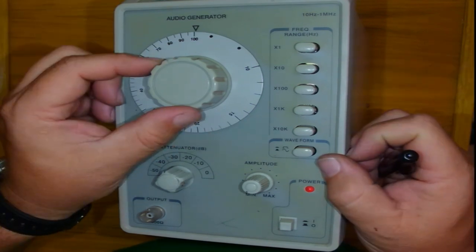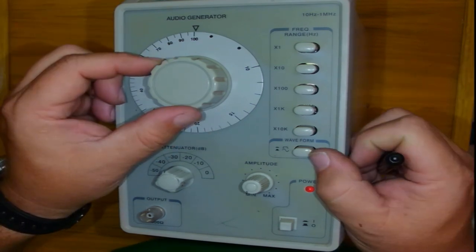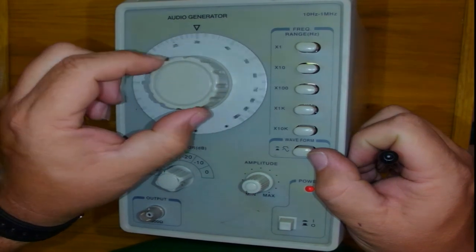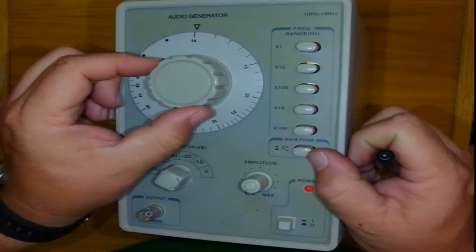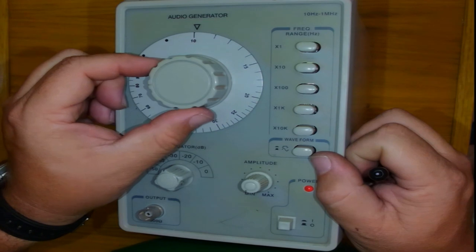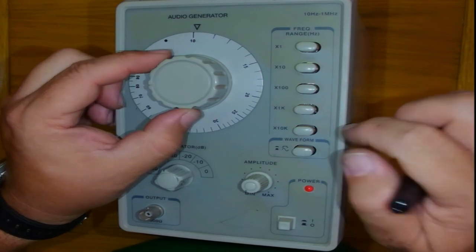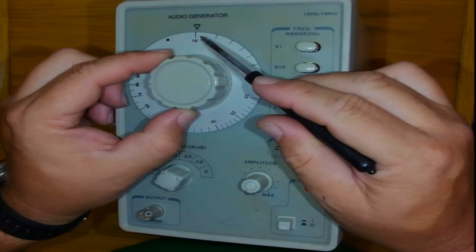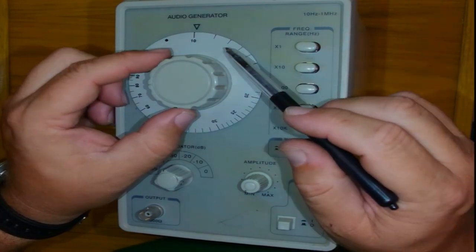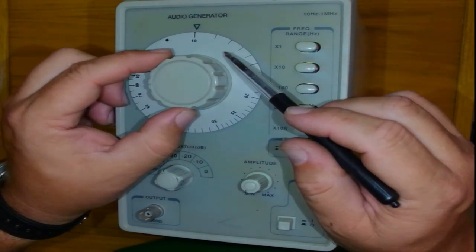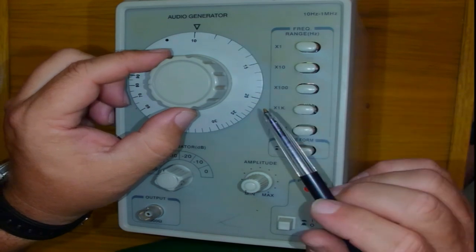Which one is correct? Both is correct. We prefer the 10 times 100 for one reason. It gives me a bit more accuracy when I'm adjusting for 1 kilohertz because I can fine tune the big dial until on the oscilloscope it will show me 1 kilohertz.